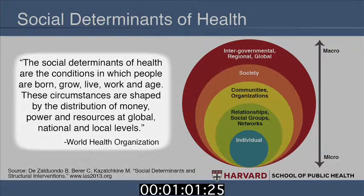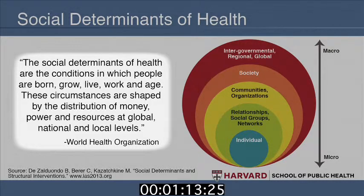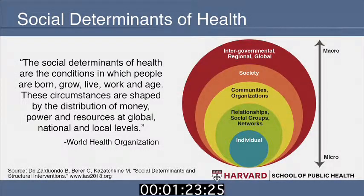The WHO says the social determinants of health are the conditions in which people are born, grow, live, work, and age. These circumstances are shaped by the distribution of money, power, and resources at the global, national, and local levels. What we can see from this chart is the factors that influence whether we are healthy or not.